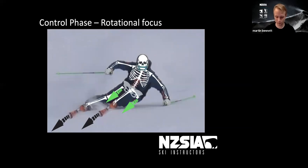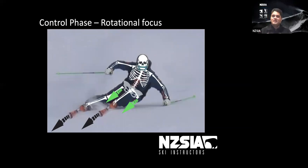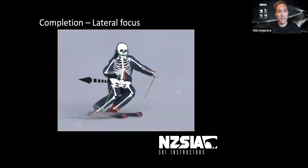Opposite to that, if the pelvis is rotated past the skis — into the turn more than the direction of the skis — then it's going to put you on the inside ski and not in a good place to balance against the forces.